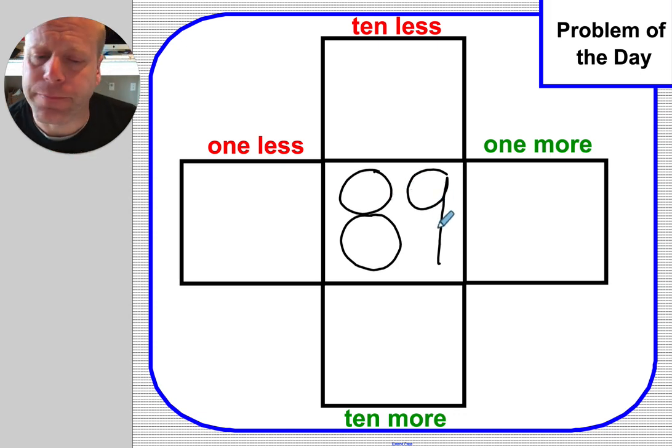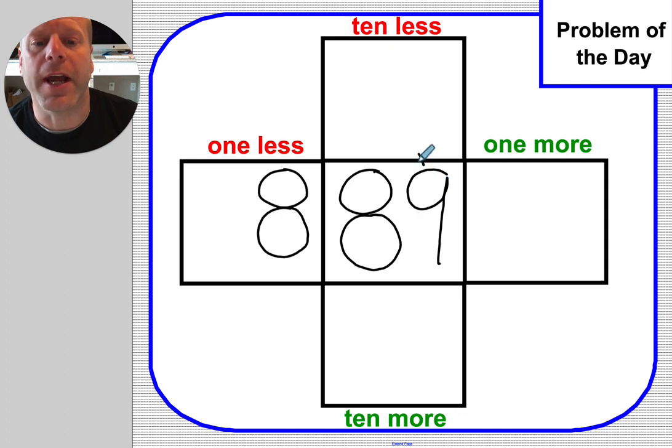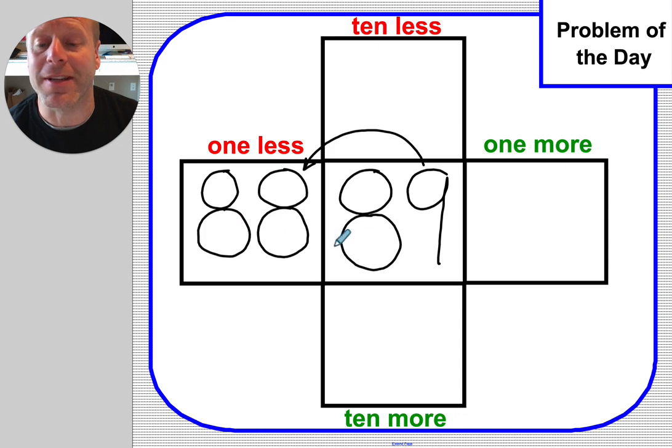So 89, in this case we have lots of ones here so taking one less is really easy. I just had nine of them so I'm going to take one of them away. So instead of having nine ones, I'm only going to have eight ones. So the nine turns back or turns into that eight and then the eight tens stays the same because I wasn't really asked to do anything with the tens and I didn't need to regroup. So 88 is one less than 89.